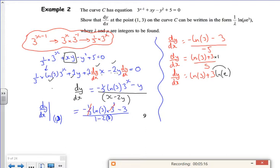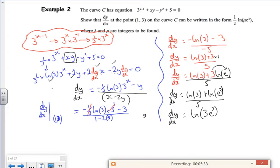Now I've got my e^3 in there, so dy/dx is log(3) + log(e^3) all over 5. So dy/dx is log(3e^3)/5. The plus tells you to times them together.